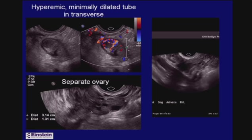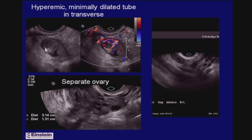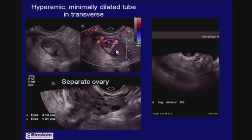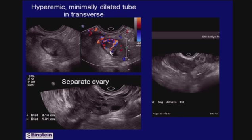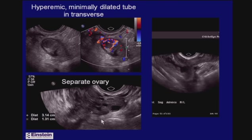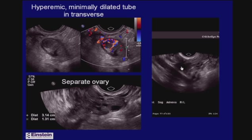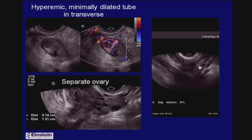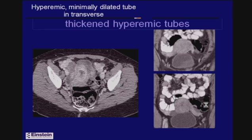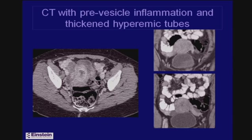Here's an example of a very slightly dilated fallopian tube in cross-section. The lumen is filled with low-level echoes and it's somewhat hard to distinguish from the wall, but using color is helpful in the acute situation because the wall is often hyperemic. The color outlines the wall and you can see the fluid inside. The key, of course, is that the ovary is separate from this structure, as shown in the cine clip.